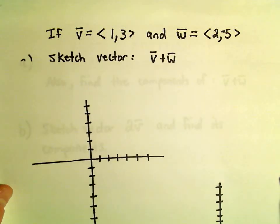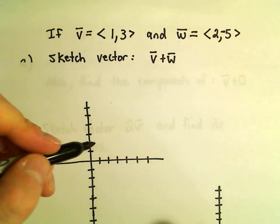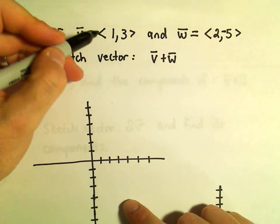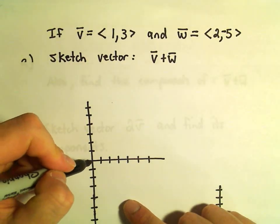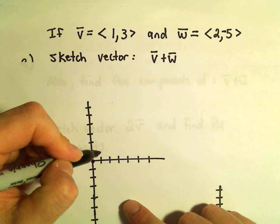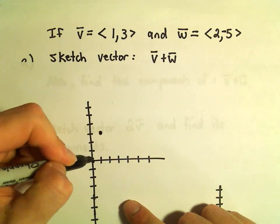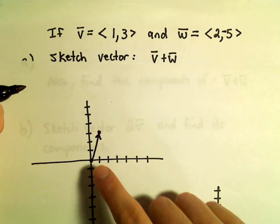So when you sketch the addition of vectors, the first thing I'm going to do is sketch vector v. So it has components of 1 and 3, so just from the origin I'm going to move 1 to the right and up 1, 2, 3. So that's going to be my vector v.